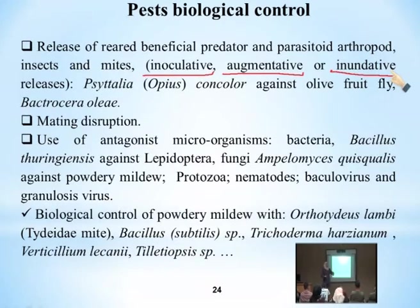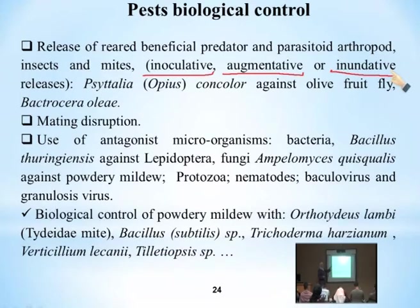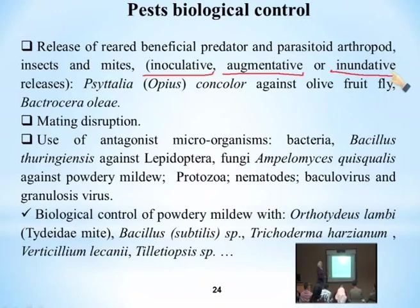An example is using Opius concolor against olive fruit fly. These three different methods are used according to the degree of infestation. Other methods of pest control management include mating disruption — either using pheromones or radiation — and the use of antagonistic microorganisms such as bacteria, fungi, protozoa, and nematodes, all used for biological control.